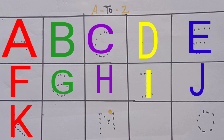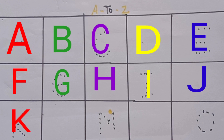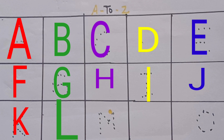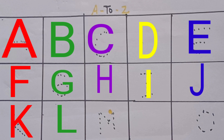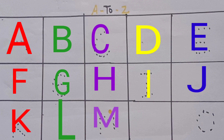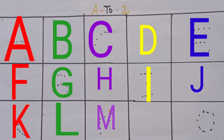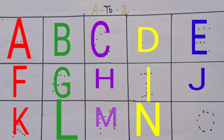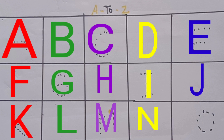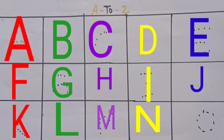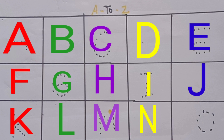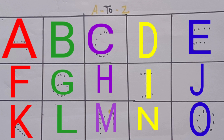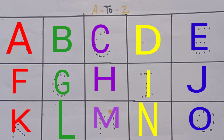G for grape. H for hen. I for ice cream. J for jug. K for kite. L for lion. M for mango. N for nest. O for orange.